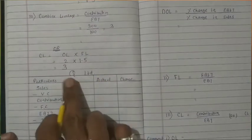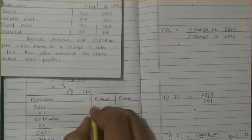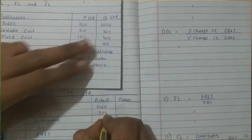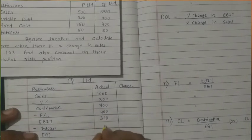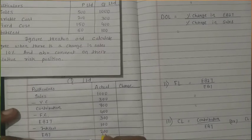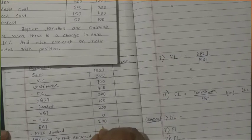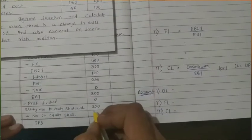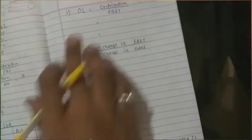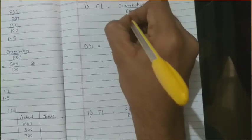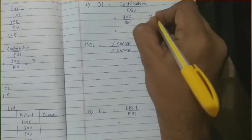Now calculate for Q Limited. Sales = 1000. Variable cost = 300. Contribution = 700. Fixed cost = 400. EBIT = 300. Interest = 100. EBT = 200. Tax = 0, EAT = 200. Preference dividend = 0, earning available to equity = 200. Number of equity shares not given, EPS cannot be calculated. Operating leverage = Contribution ÷ EBIT = 700 ÷ 300 = 2.33.